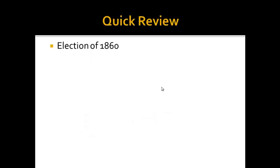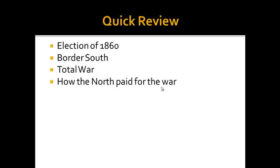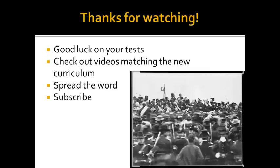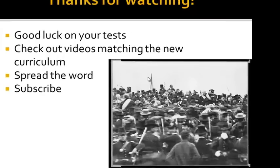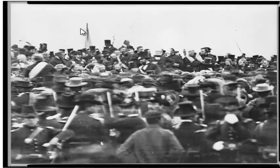Let's do a quick review. The election of 1860 was a huge turning point. Be able to identify the border states of the border South. Know what total war means and that both the North and the South instituted it. Be familiar with ways that the North paid for the war. And know what the Emancipation Proclamation did and did not do. Thank you very much for watching — here is a picture of Abe Lincoln about to read the Gettysburg Address; see if you can identify him in it, and check out my video on the Civil War in the description. I'll see you back here for Chapter 16, which deals with Reconstruction. Have a good day!